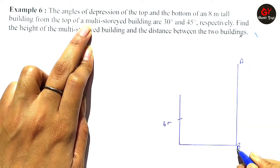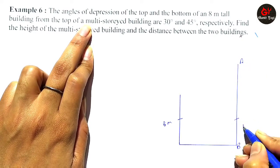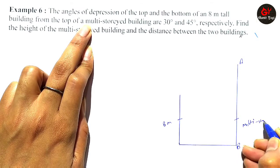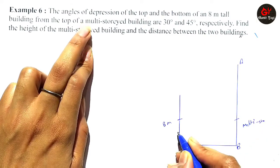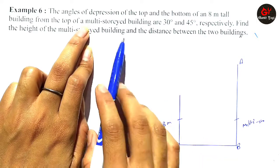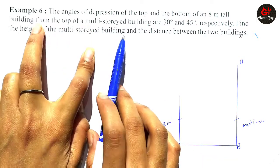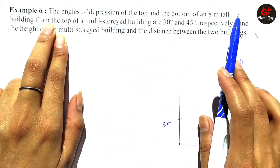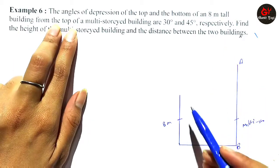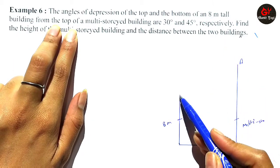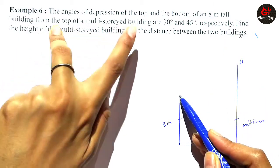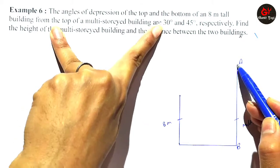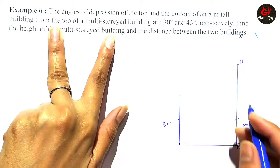A and B represent your multi-storied building, and this is our 8-meter tall building. It has been said that the angles are made from the top of the multi-storied building — one to the top and one to the bottom of the 8-meter building — giving angles of 30 degrees and 45 degrees.